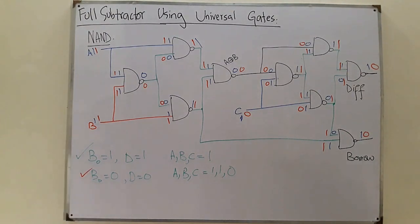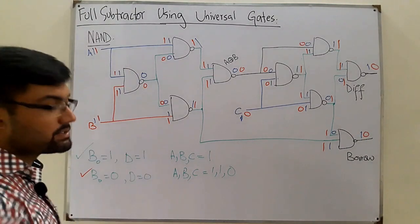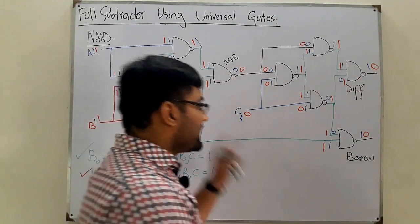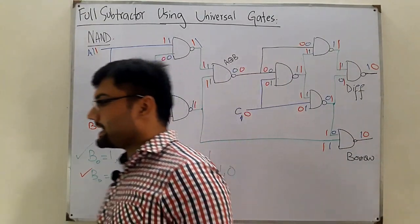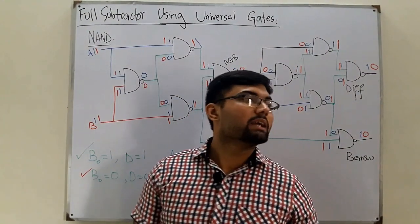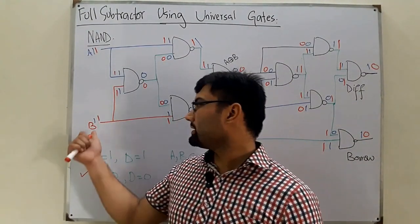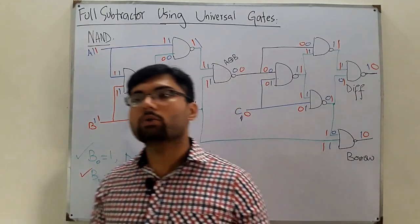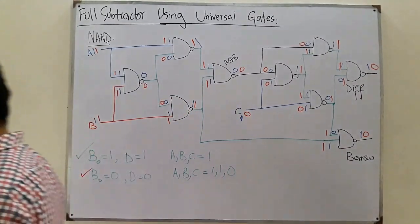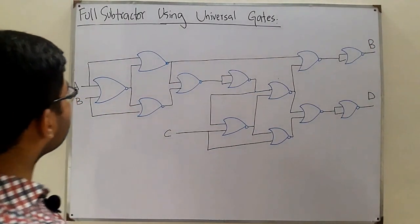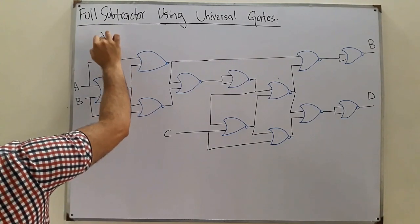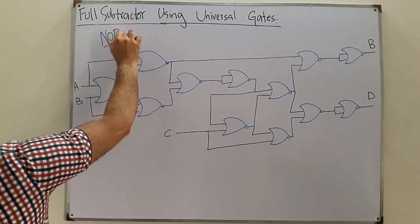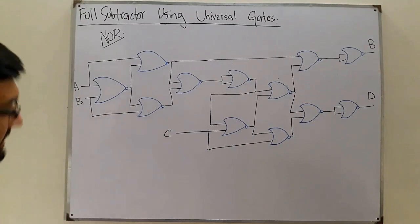So this completes the full subtractor using NAND gates. NOR gates can also be used as universal gates for a full subtractor, though they are not commonly used and are slightly more complex. Let's draw the NOR gate circuit diagram and take one example — A=1, B=1, C=0 — to prove it.